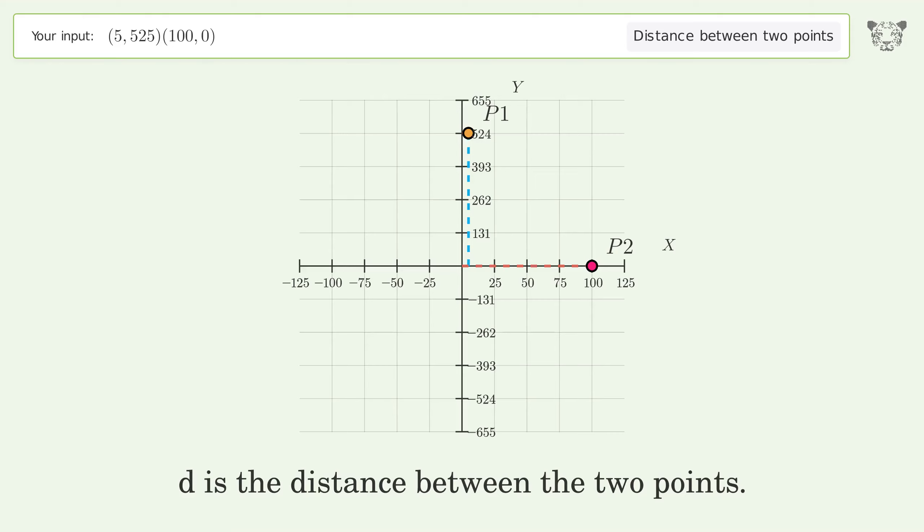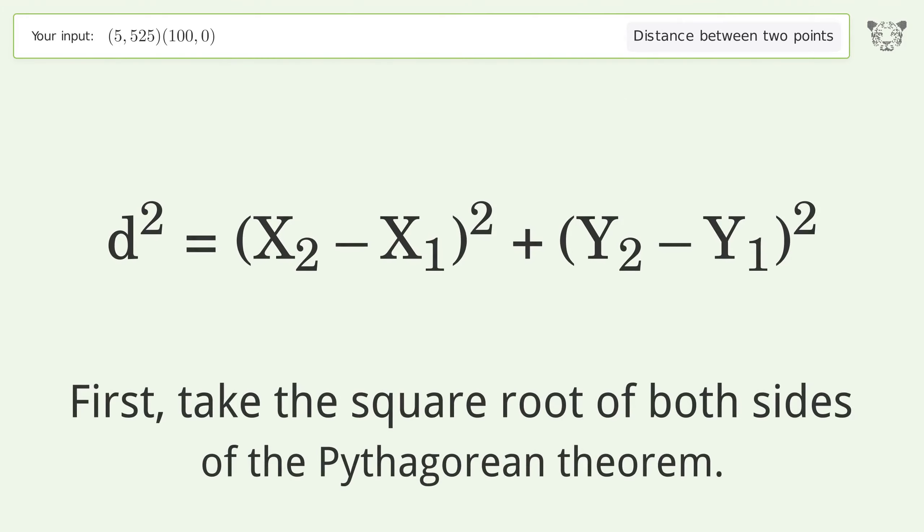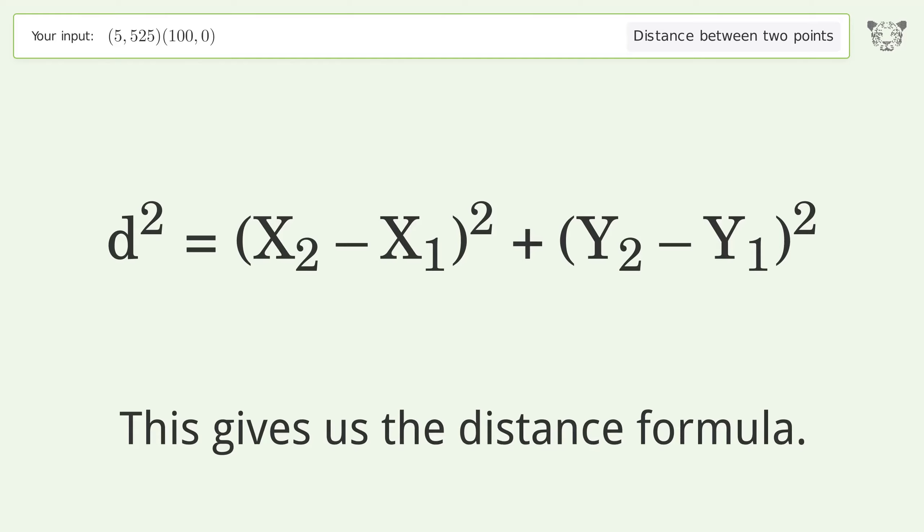d is the distance between the two points. First, take the square root of both sides of the Pythagorean theorem. This gives us the distance formula.